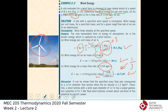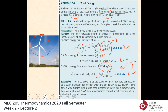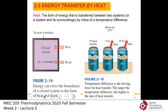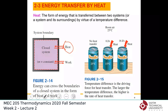Those are the forms of energy associated with mass. Now let's look at energy transfer. A system — closed or a control volume — can gain or lose energy. The only two mechanisms by which a closed system can exchange energy are heat transfer and work interaction.